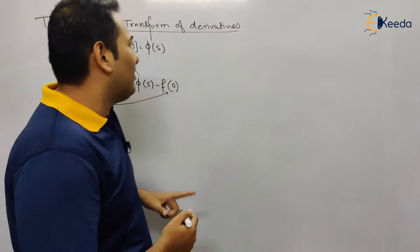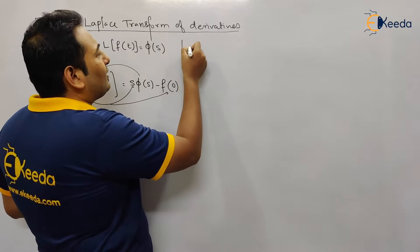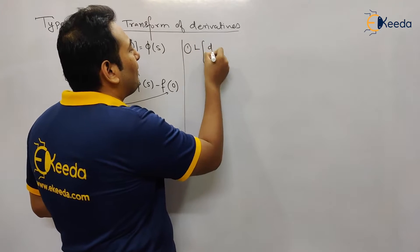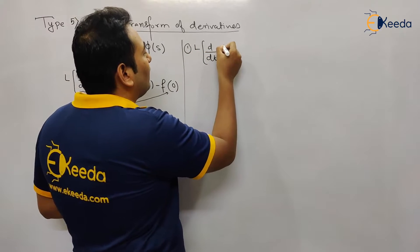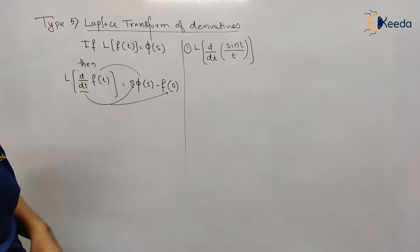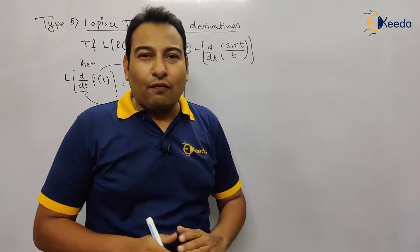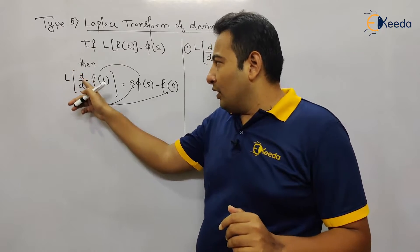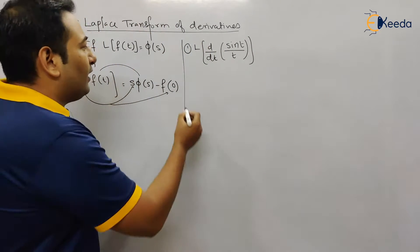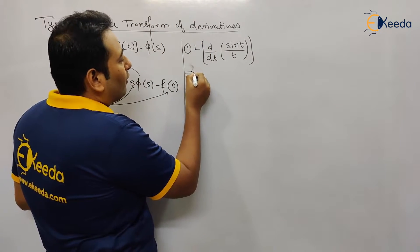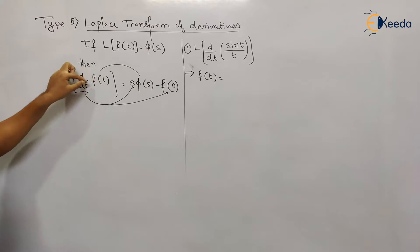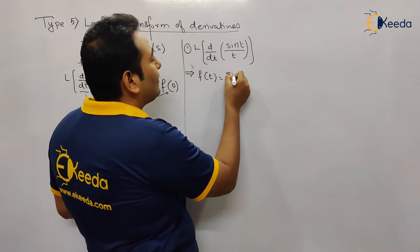It will be very clear with an example. Problem number one: find the Laplace of d/dt of (sin t / t). This is the first example on this particular property. The technique: first forget about the derivative part — whatever you are left with is your f(t). So here, f(t) is sin t upon t.